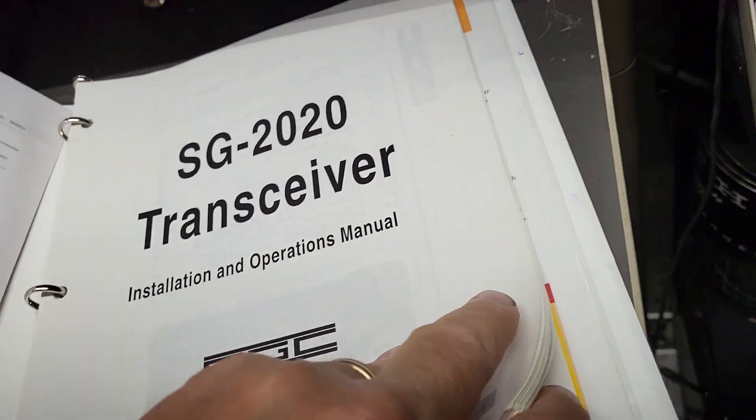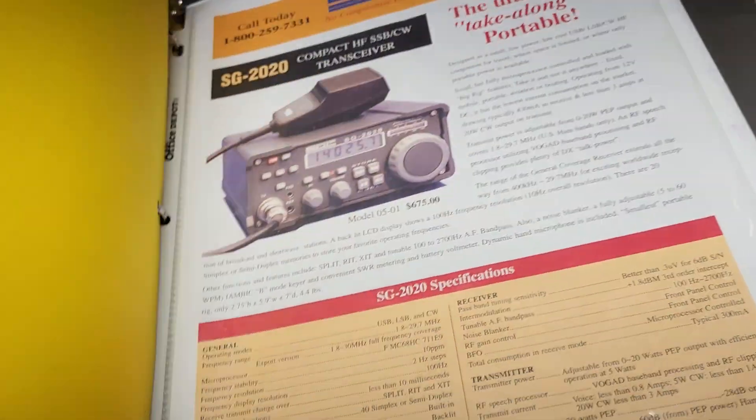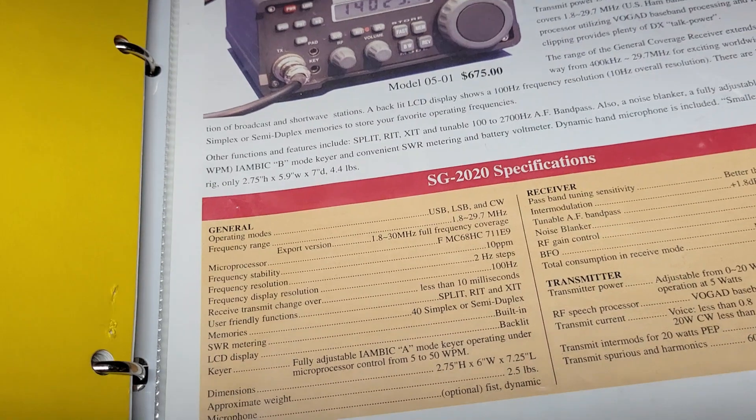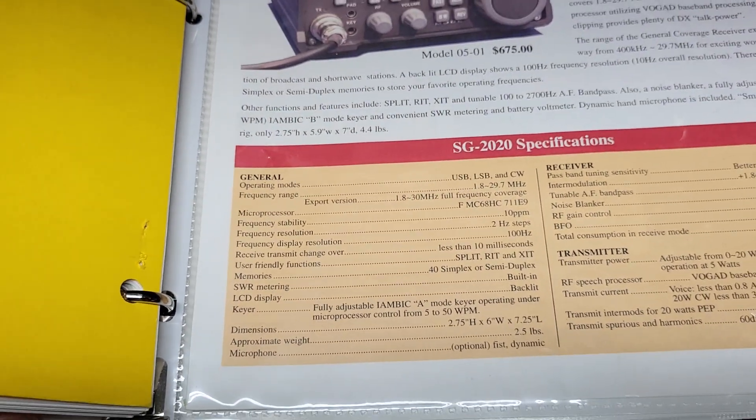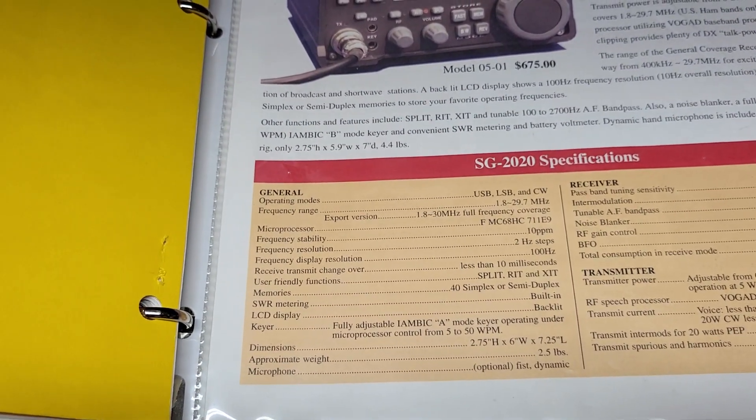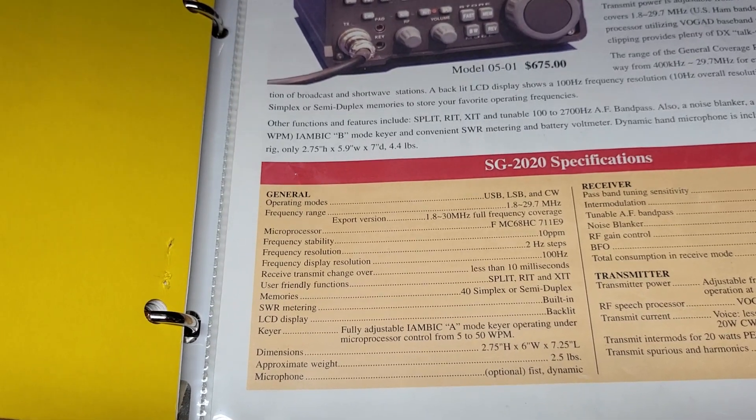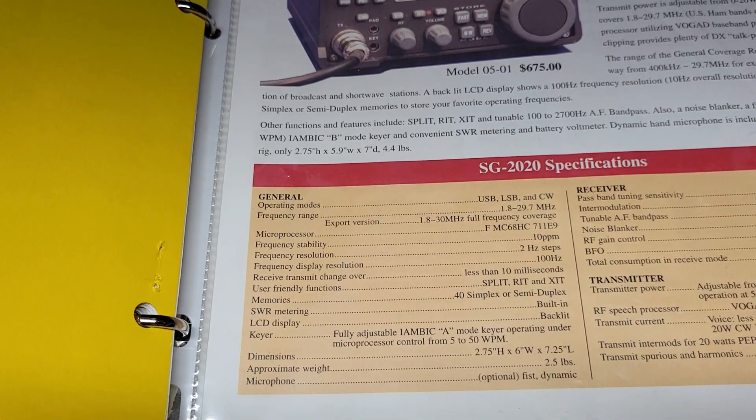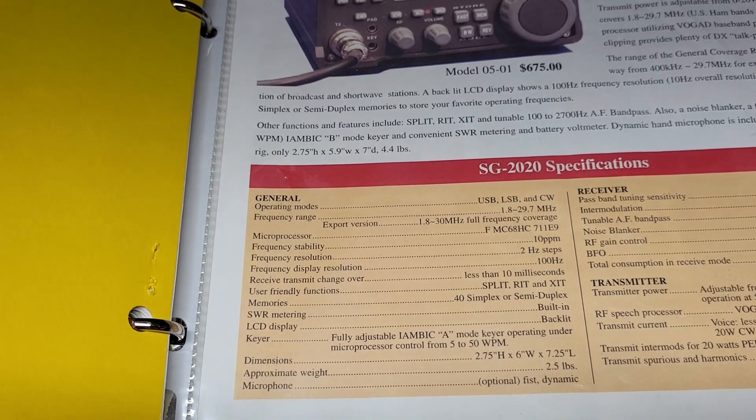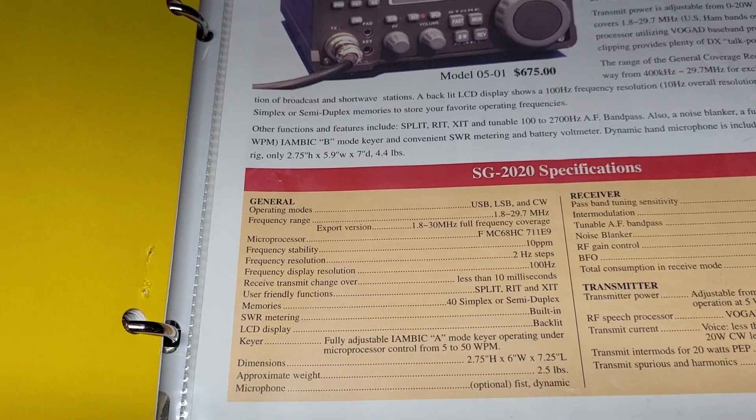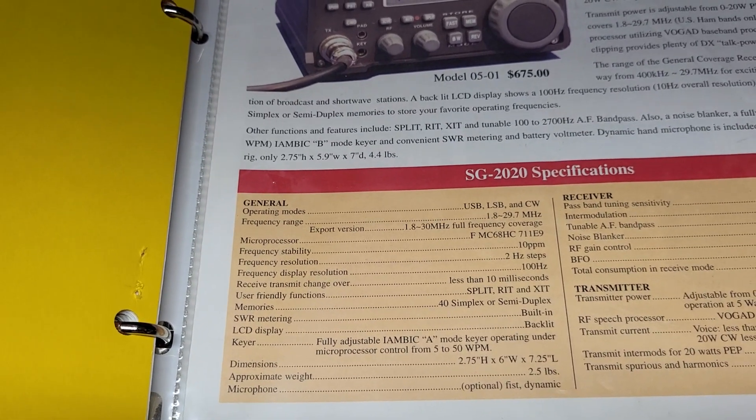Here are the operating modes. It covers upper and lower sideband CW. The frequency range is from 1.8 to 29.7 megahertz, and it's a nice little unit. I believe this is a 5-watt rig.